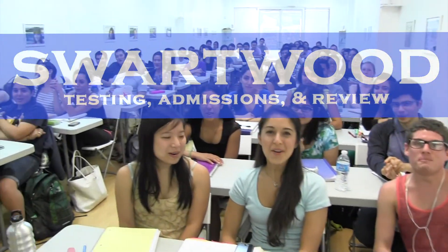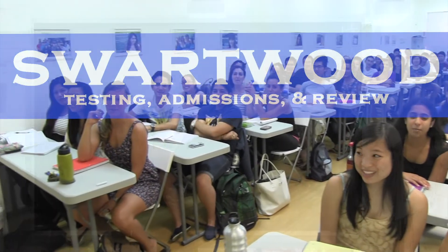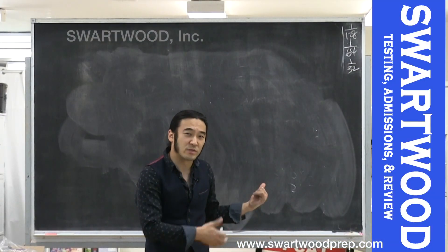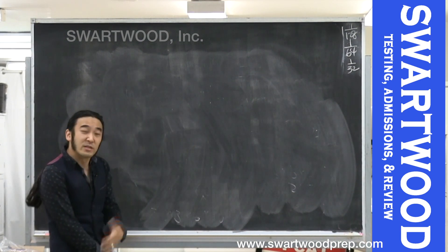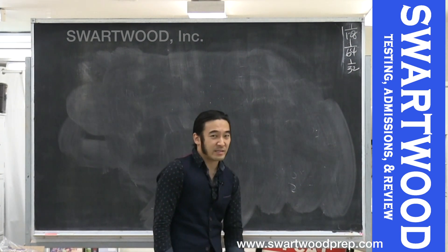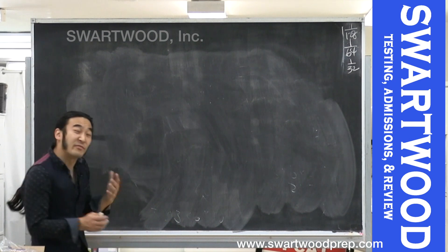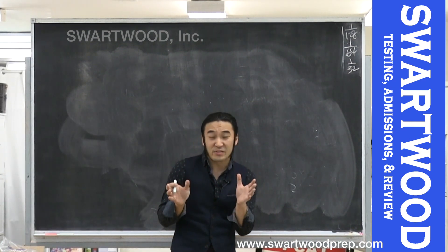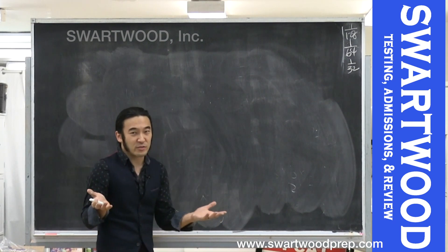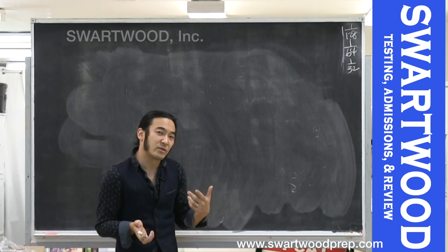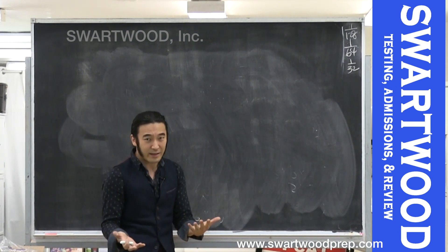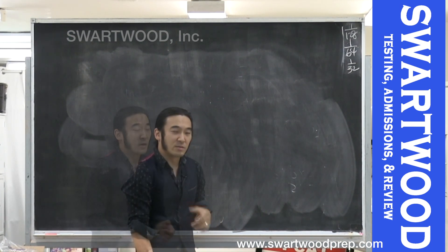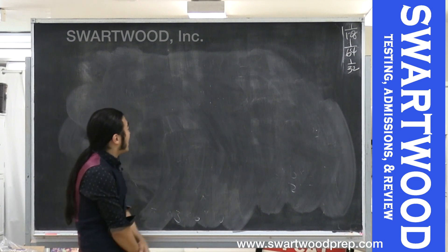This is John from Sportwood. Corporate just gave us permission to run an online course for the ISEE, so we're going to start with the math portion. The ISEE math section has two components: one is more about problem solving and the other is about content achievement. Both rely on strategy and content, so we want to work on both.